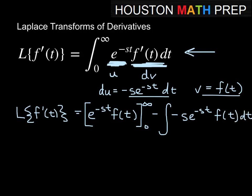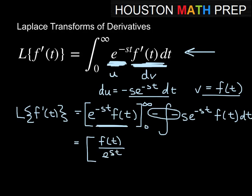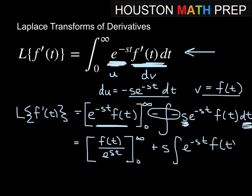We combine the two negatives, so the expression becomes f of t over e to the st, evaluated from 0 to infinity, plus s times the integral from 0 to infinity of e to the minus st f of t dt, since s is a constant with respect to dt and can be pulled out.